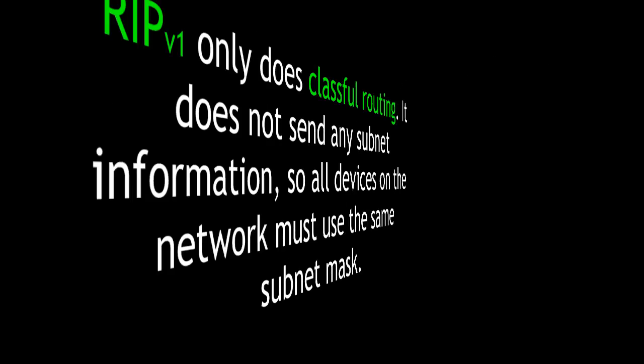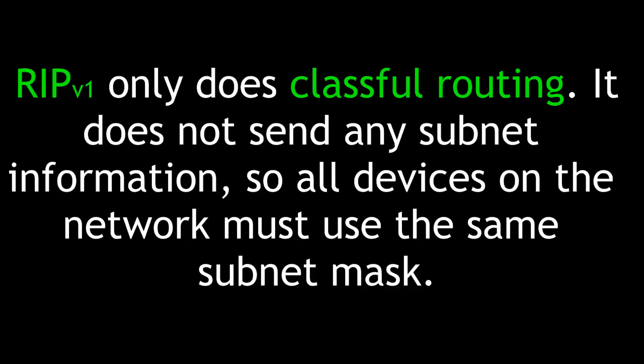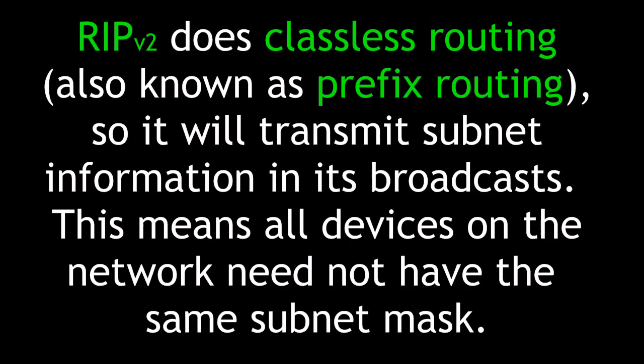There are two versions of RIP: RIP version 1 and RIP version 2. RIP version 1 only does classful routing — it does not send any subnet information, so all devices on the network must utilize the same subnet mask. RIP version 2 does classless routing, also known as prefix routing, so it will transmit subnet information in its broadcasts, meaning all devices on the network need not have the same subnet mask.